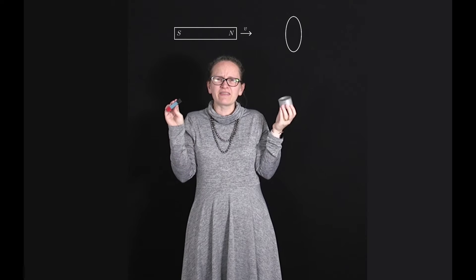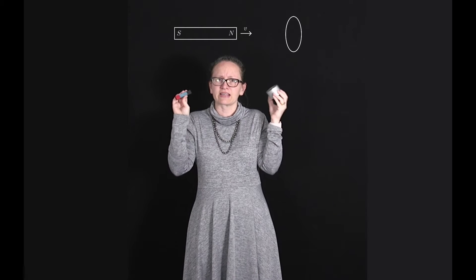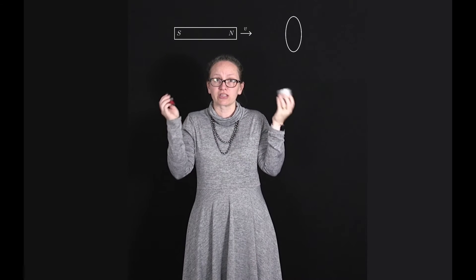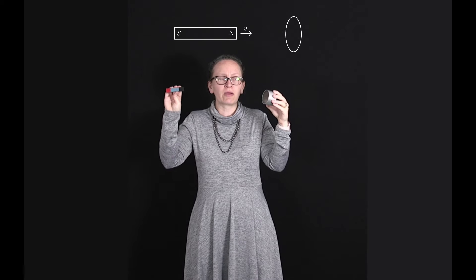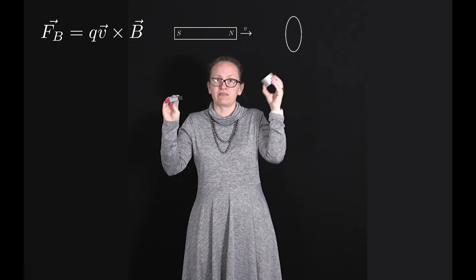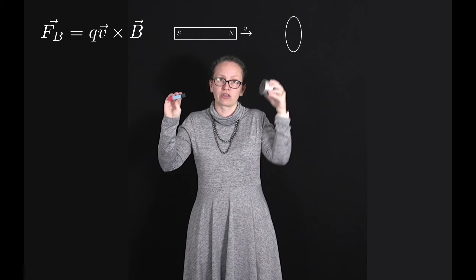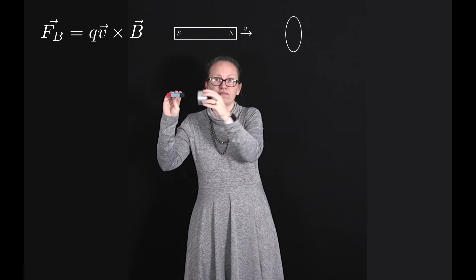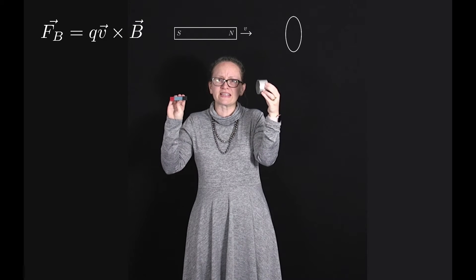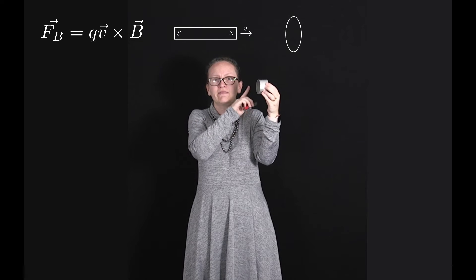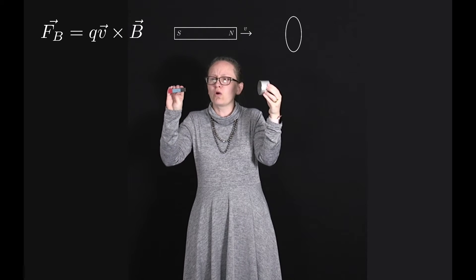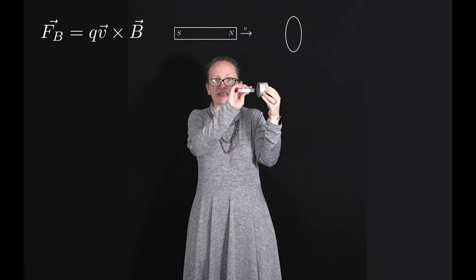Let's think about what can be causing that current, because the current starts because there is a force on the electrons which starts the electrons moving. When we were moving the loop towards the magnet, the force was given by the magnetic force F = QV × B, because the electrons had a velocity through the magnetic field from the magnet. However, if the loop is stationary, then there can't be any velocity on the electrons — they're initially stationary. So what can be starting that induced current?